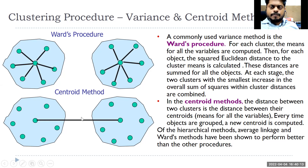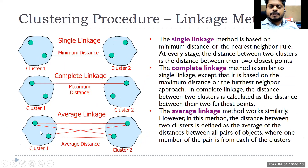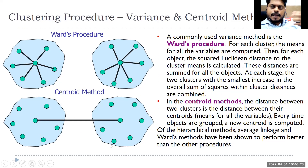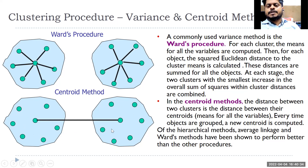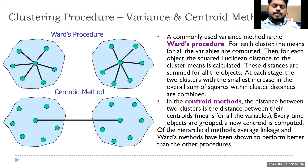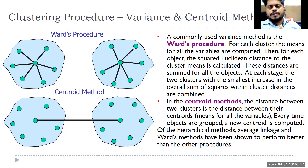Centroid method is similar to average linkage. In average linkage with 30 points in cluster one and 40 in cluster two, you compute 30×40 = 1,200 pairs and take the average distance. In centroid method, you instead find the centroid of each cluster and take the distance between those two centroids — much more efficient. The key principle: distance between clusters should be maximal and distance within clusters should be minimal.